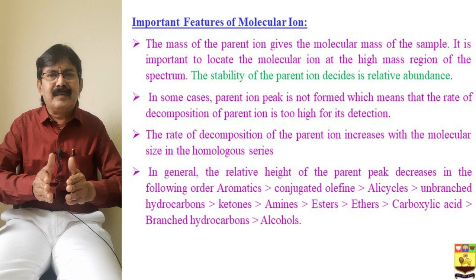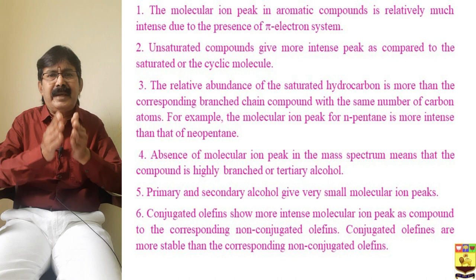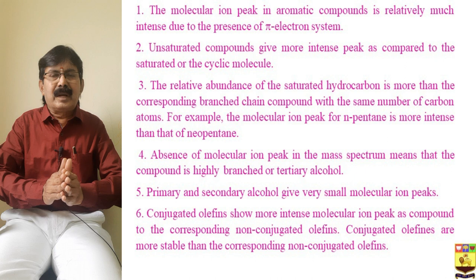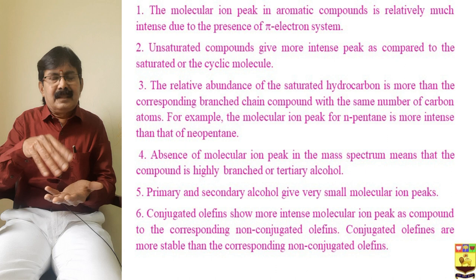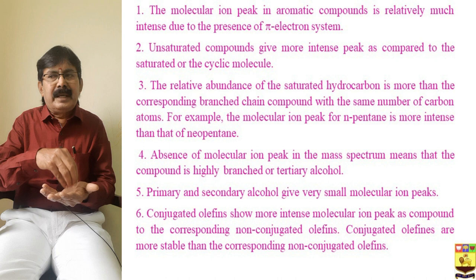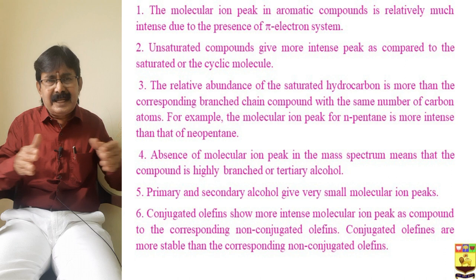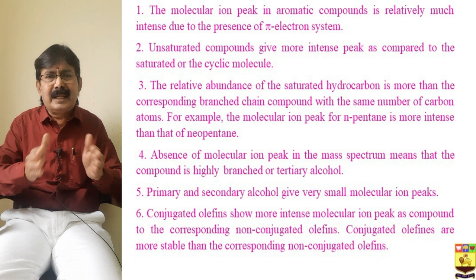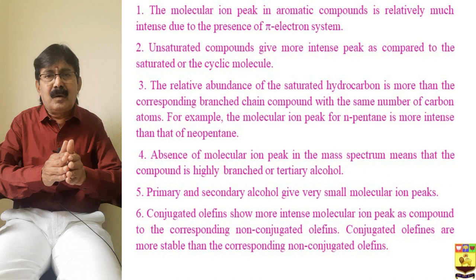Aromatic compounds undergo alpha-cleavage fragmentation to produce daughter ions. The aromatic compounds give the most intense peak. The molecular ion peak in aromatic compounds is relatively much intense due to the presence of the pi-electron system. In the aromatic system we have the delocalized pi electrons, so they produce a high-intensity molecular ion peak. Similarly, unsaturated compounds give a more intense peak than saturated or cyclic molecules. Comparing straight chain with branched compounds, straight chain compounds are more stable than branched ones.